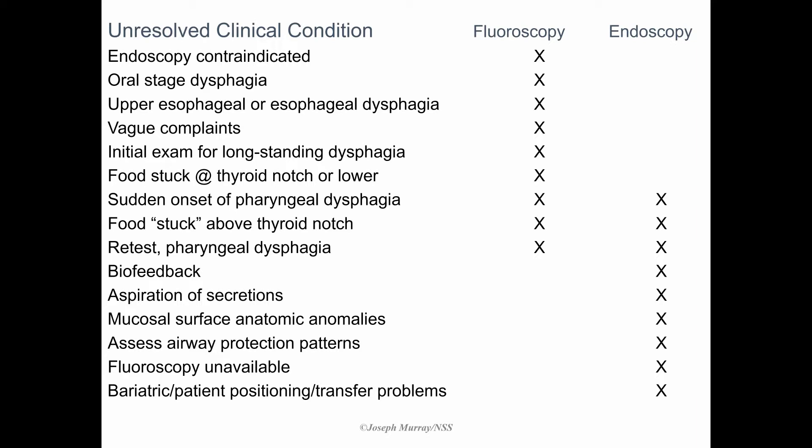There is some overlap. If there's a sudden onset of pharyngeal dysphagia, food stuck above the thyroid notch, or a retest for pharyngeal dysphagia, each of these exams will serve well. If you're attempting biofeedback, it's very easy to show the image to the patient. The image of the larynx provided by the laryngoscope is intuitively understood to be the airway by patients and family, and so if a discussion is necessary to convince someone of the peril of taking food or liquid into the airway, this is a very good instrument.